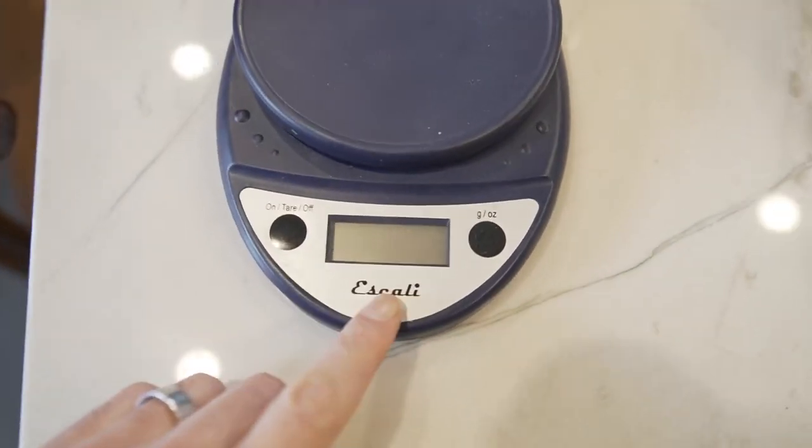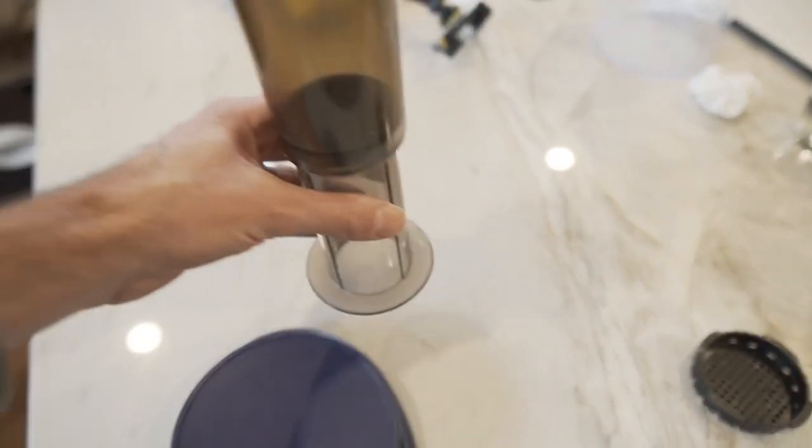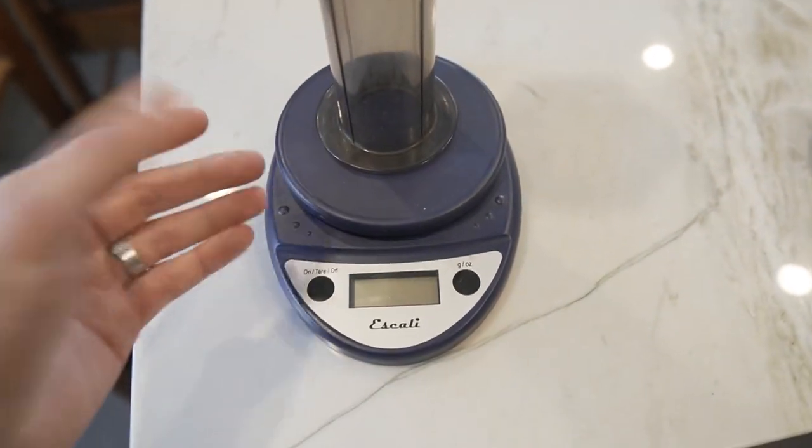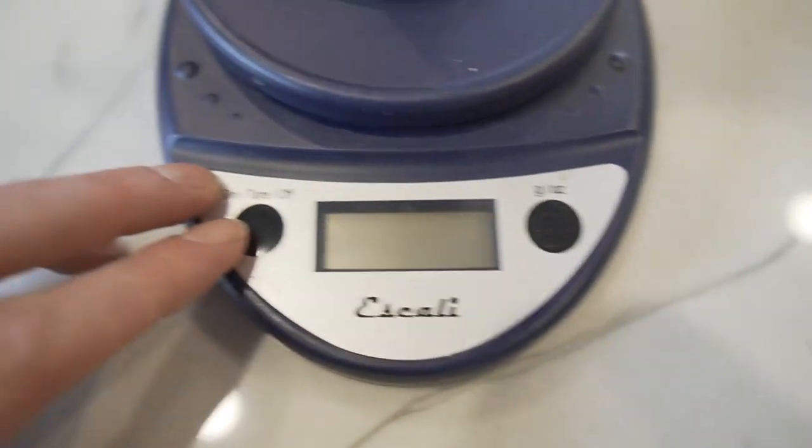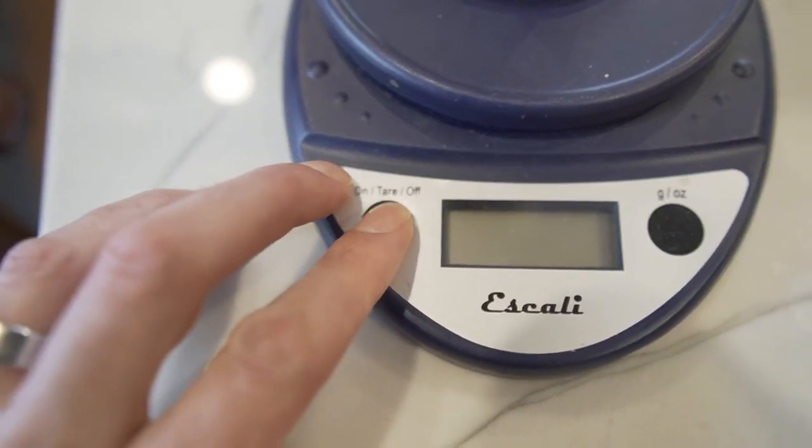This is the Escali scale. I use this for measuring my coffee and all of my food when I'm doing calorie tracking. It's simple two button operation. You just turn it on.